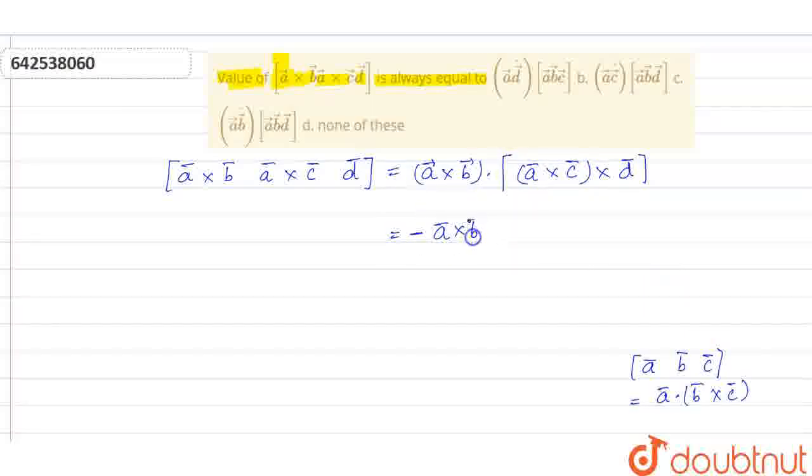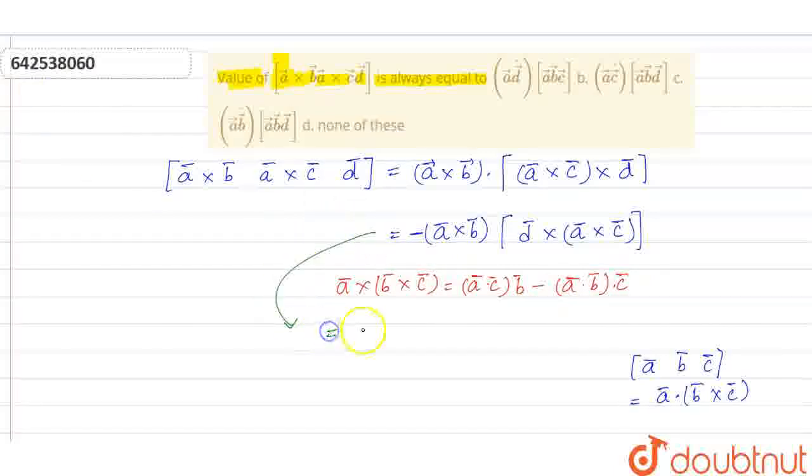So, minus common, we will get A cross B. Inside, we have interchanged. So, we will get D cross A cross C. Now, we know that one of the properties A cross B cross C is equal to A dot C times B minus A dot B times C. With this logic, we get minus A cross B vector. Inside, we will get D dot C, A vector minus D dot A vector, C vector.